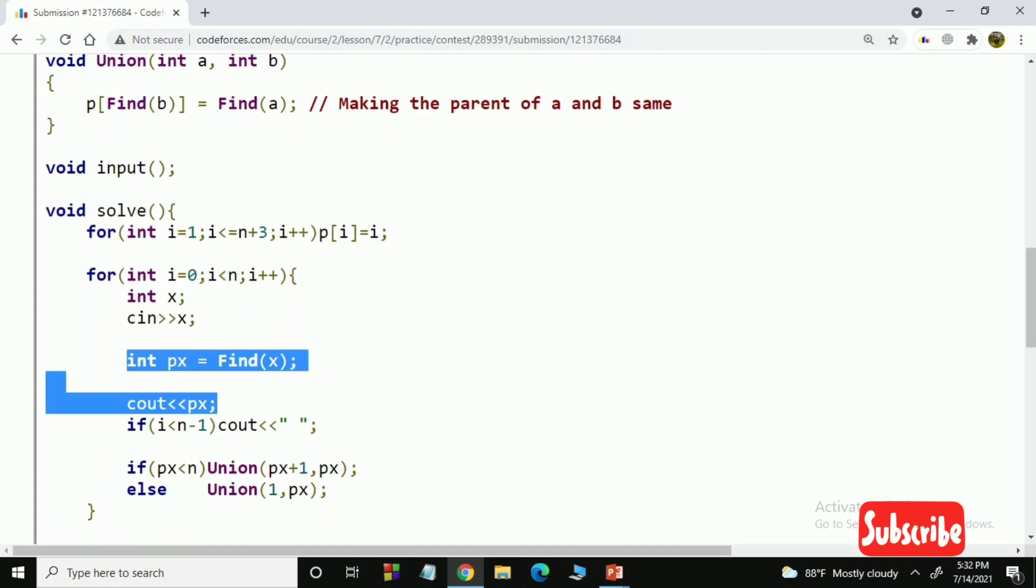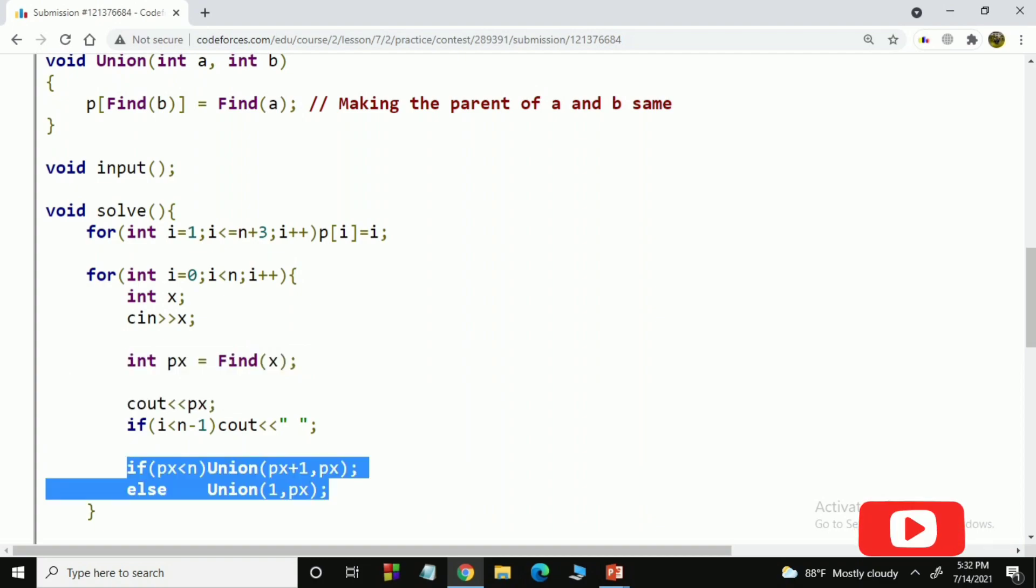Now, once a car wants to park in some position, the answer will be the parent of that position. After that, the answered position will be united with its next circular position. In other words, the parent of the answered position will be updated with the parent of its next circular position.